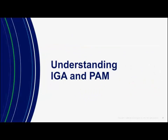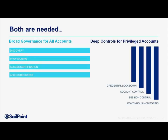Between identity governance and administration and privileged access management, we have two pivotal parts of our security and operations infrastructure. On the IGA side, what you're getting is broad governance for all accounts — the ability to discover accounts, provision or de-provision accounts according to a lifecycle, run access certification campaigns to recertify access at the appropriate frequency depending upon your policies and the sensitivity of certain accounts, applications, and access. An IGA solution is all about having a strong business interface and policy base, workflow, and wherever possible a large amount of automation to ensure we're establishing broad governance for all accounts.